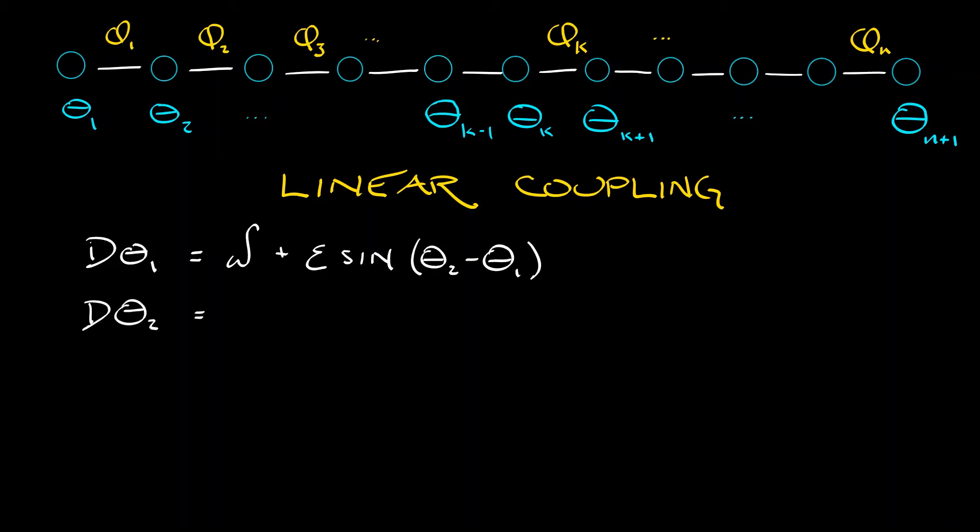Because theta 2 is not only connected to theta 1, it's connected to theta 3. So what we get is d theta 2 is omega, its internal frequency, plus epsilon times sine of theta 3 minus theta 2 minus epsilon sine theta 2 minus theta 1. So the guy to the right pulls you forward, the guy to the left pulls you back.